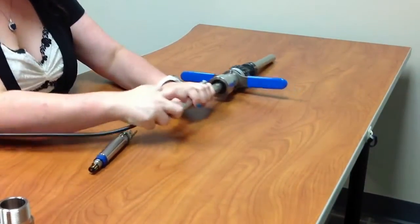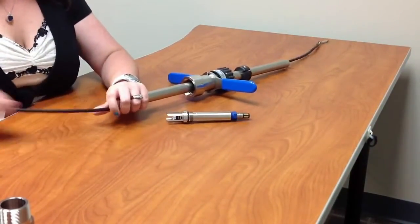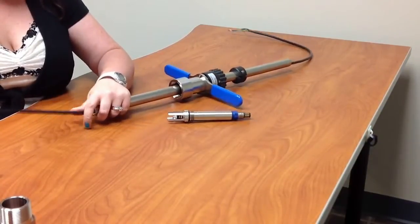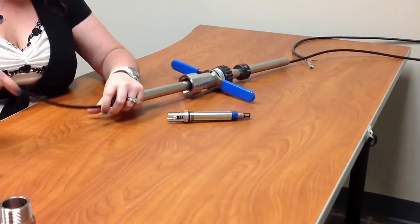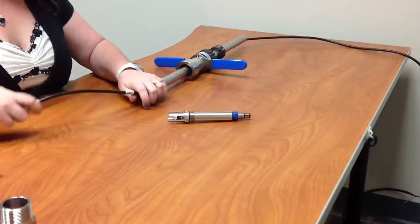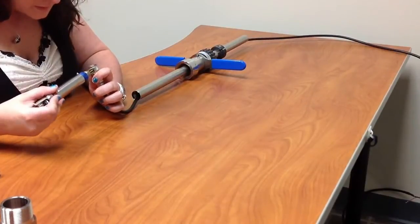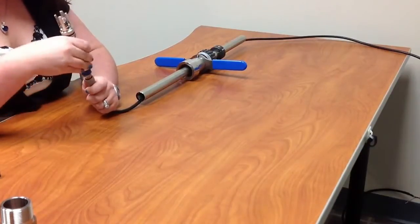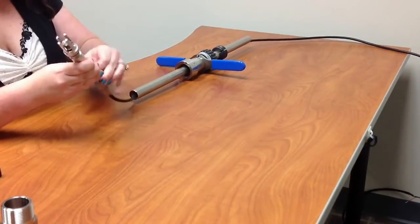You're going to feed your cable through the PR-10 body. Then you're going to want to connect it to your sensor, or technically you could connect it to your sensor first and then feed it through either way.